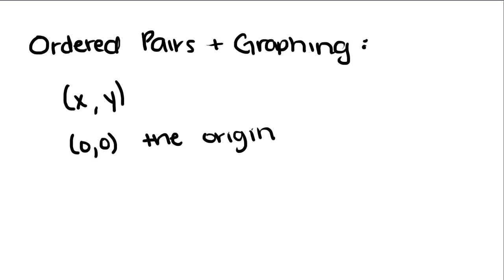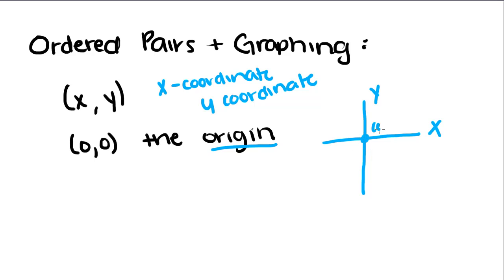Our focus today is on graphing. This is called an ordered pair, and you've got an x-coordinate and a y-coordinate. This is how they're written: x, y. This point right here, (0,0), is called the origin. That's where the two sets of axes, the x-axis and the y-axis, meet at (0,0).